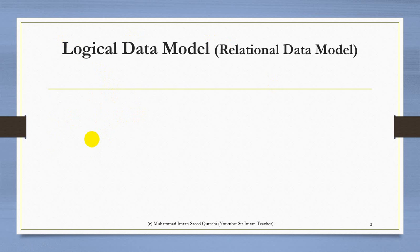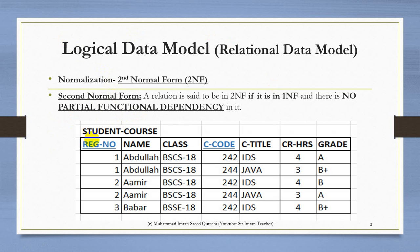So far we have done the First Normal Form, and we got a table that is in 1NF as it has no repeating groups in it. When we checked for anomalies, we found that this table has insertion anomaly — I cannot insert a new student if there is no course for him, and I cannot add a new course if there is no student for it.